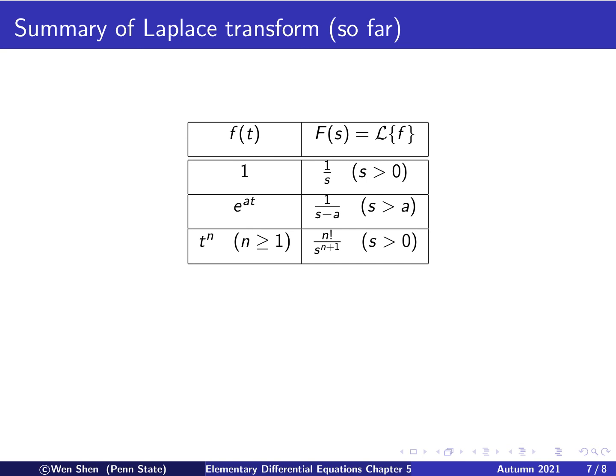Let's summarize the Laplace transforms of some common functions encountered so far — it would be useful to memorize these. The Laplace transform of constant 1 is 1/s for s > 0; the Laplace transform of e to the at is 1/(s minus a) for s > a; and the Laplace transform of t to the power n is n factorial over s to the power n plus 1, for s > 0. More examples and properties will be added to this table later.